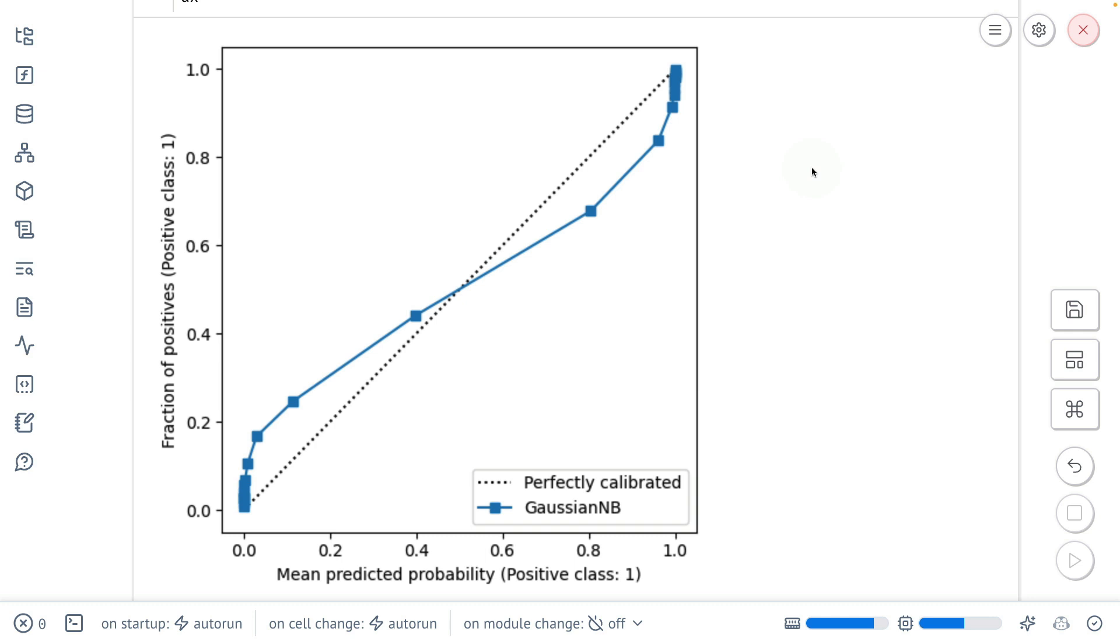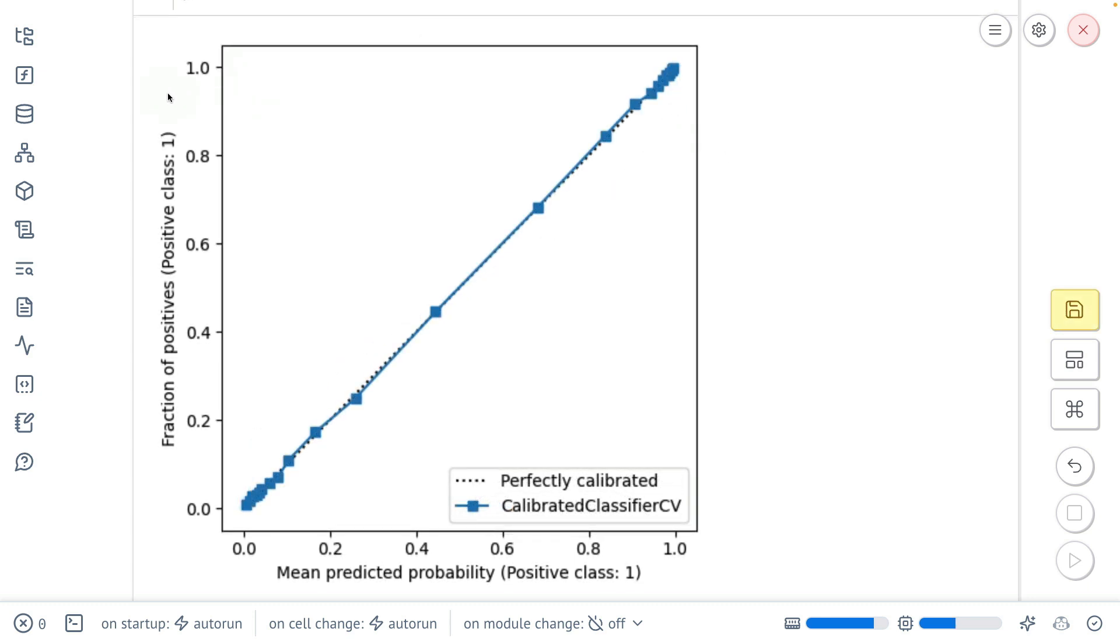However, there is a remedy. What we could do is we could wrap around this underlying estimator and tweak the probability values in such a way that the calibration chart goes from looking like this and eventually looks a lot more like this.